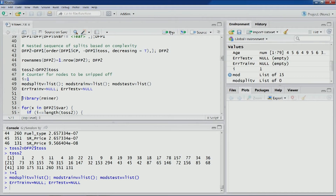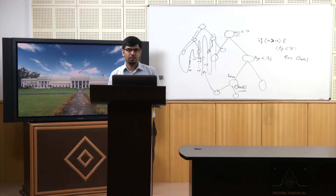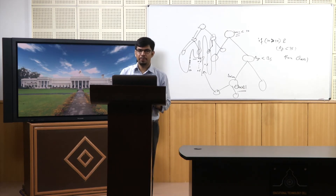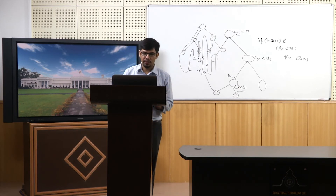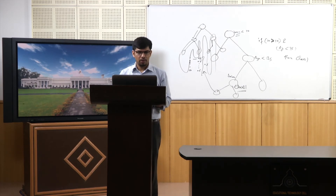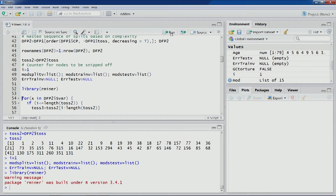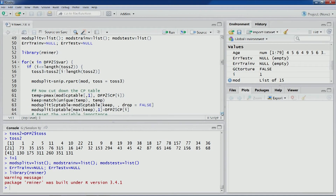Because this is a regression tree, the metric we use is RMSE instead of misclassification error as used in classification trees. We load the 'Metrics' package to compute RMSE within the loop for each model, which will be used to find the minimum error tree and the best pruned tree.